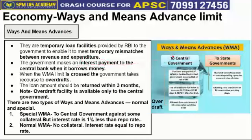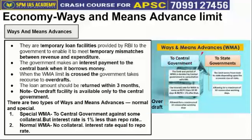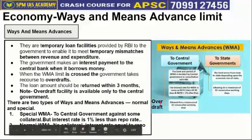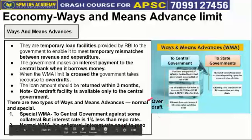On this loan, the central or state government that takes the loan must also pay an interest amount to RBI. An overdraft facility is also available — the RBI announces in advance how much loan the central government and how much the state governments can take under Ways and Means Advance. But if a government has taken its full allotted amount and still needs more, it can use the overdraft facility — that is, borrowing beyond the permitted limit — and of course must pay interest on that as well.